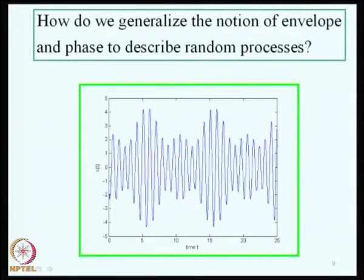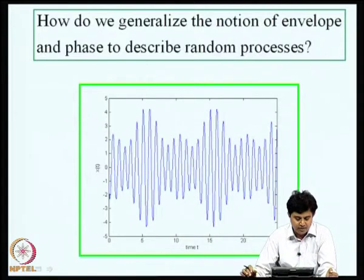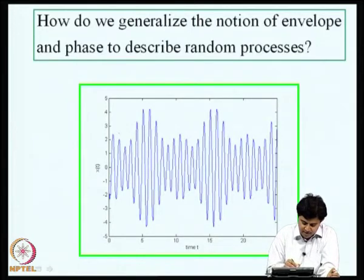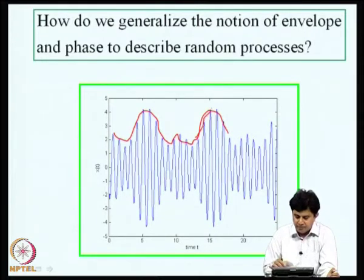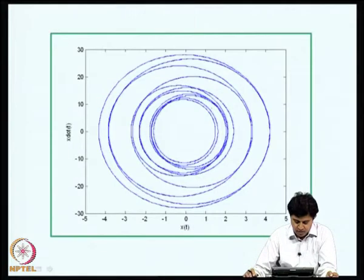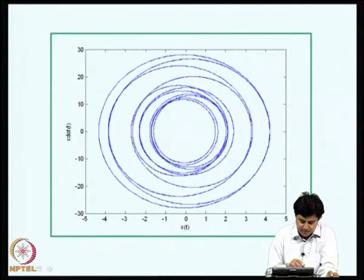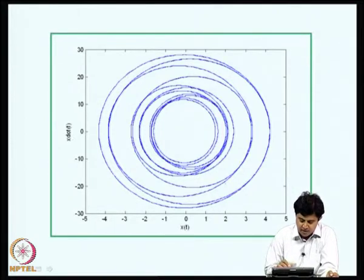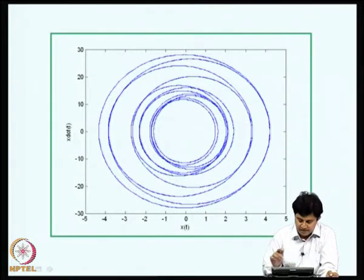We now pose the question: how do we generalize the notion of envelope and phase to describe random processes? For a sample of a narrowband process, the envelope should pass through all the peaks — that is what we intuitively expect, but now we need to formalize this notion. If we look at the plot of X-dot(t) versus X(t), a narrowband process has a specific character — it does not fill up the entire space. If X(t) is a broadband process, it simply fills up this space.